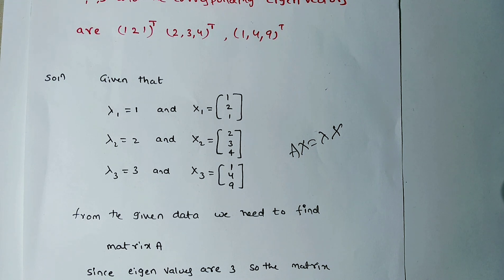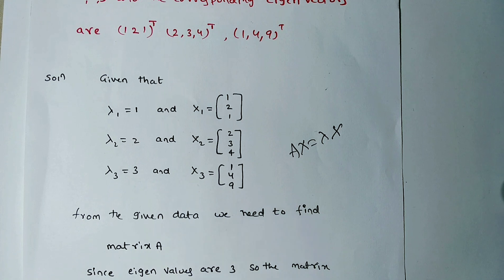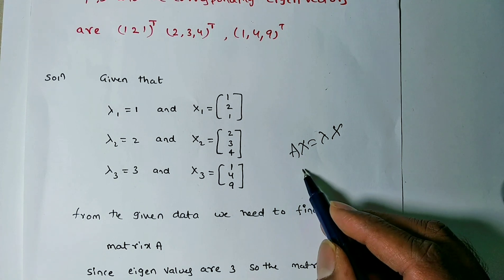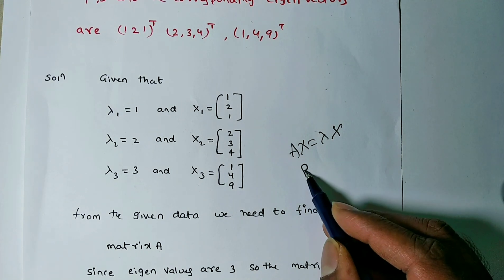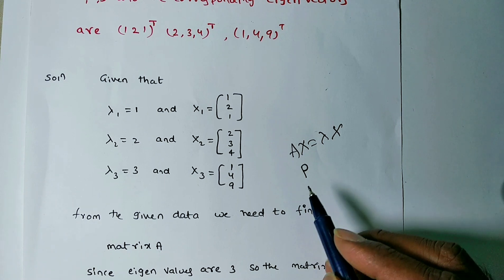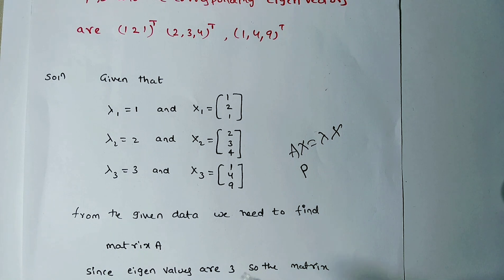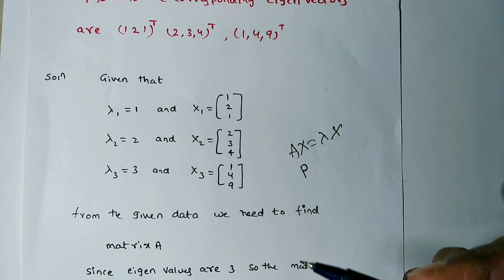For the shortcut method, we know three vectors x1, x2, x3. From these three vectors we can form a matrix called the modal matrix, denoted by capital P, which contains x1, x2, x3 as columns. If we know the modal matrix, we also require the diagonal matrix to find matrix A.